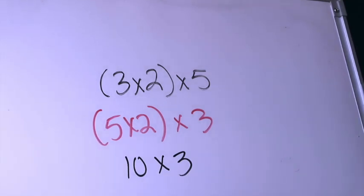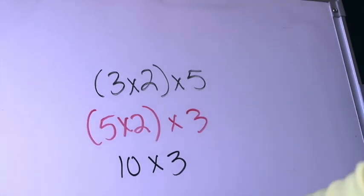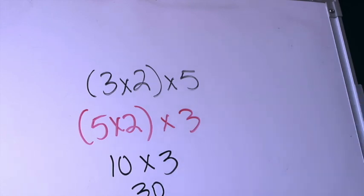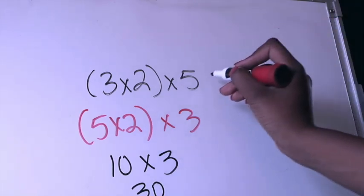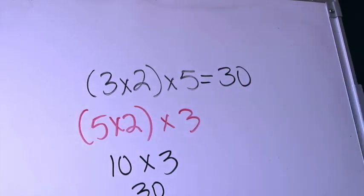I know my facts of 10 for sure and I know that 10×3, let me move my board back just a little bit, 10×3 is going to be 30. So I know that (3×2)×5 is going to equal 30 because I chose to change the grouping using the associative property.